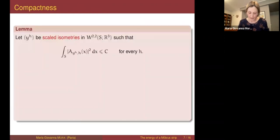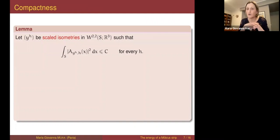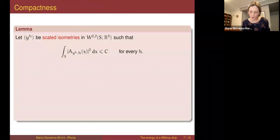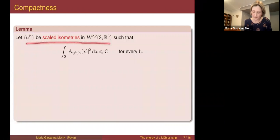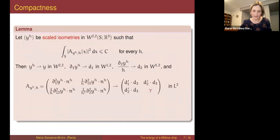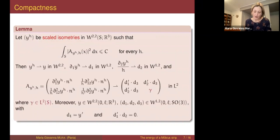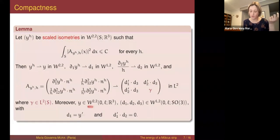The first result we prove is about compactness: what kind of compactness can we get on a sequence of scaled isometries with equibounded energies, and what properties does the limit have? This is also needed to understand the right topology for computing the Gamma limit. We start from a sequence of scaled isometries in W^{2,2} with bounded energies. As expected, the deformations are compact weakly in W^{2,2}, and the limit y is a W^{2,2} function only of the x₁ variable — the deformation of the midline.